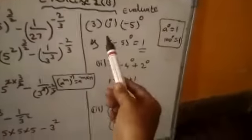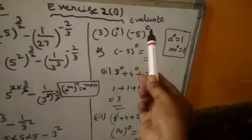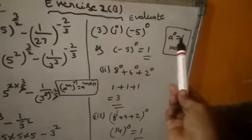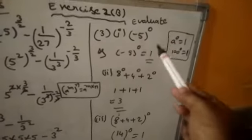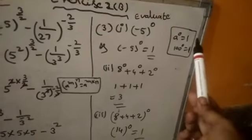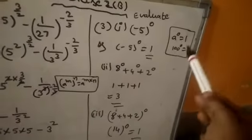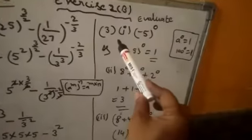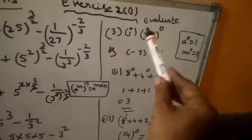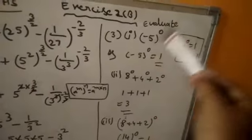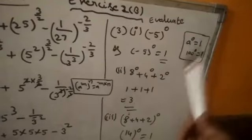Next question — third question, third main, first one. Evaluate: (-5) whole to the power of 0. There is one formula: a to the power of 0 equals 1. Any number to the power of 0 has value 1. So (-5) whole to the power of 0 — this is one number — any number to the power of 0 equals 1. So the answer is 1.